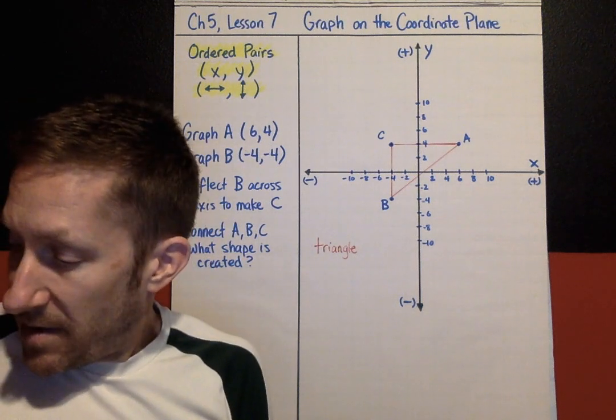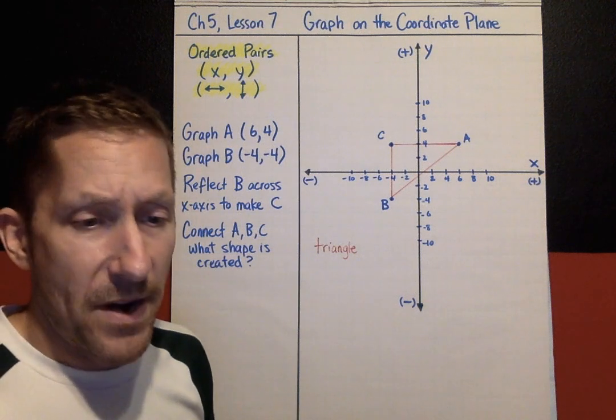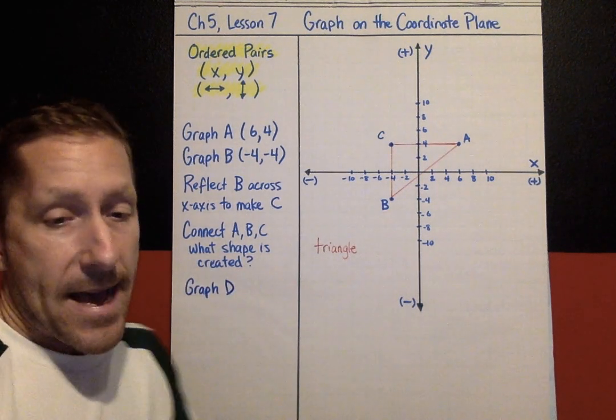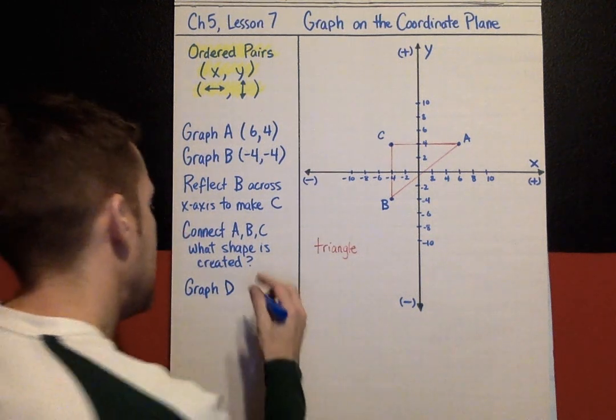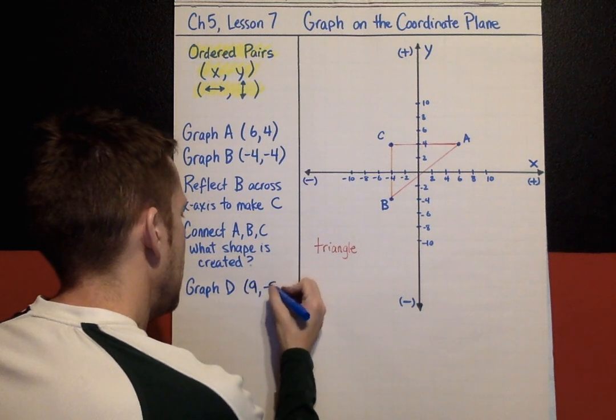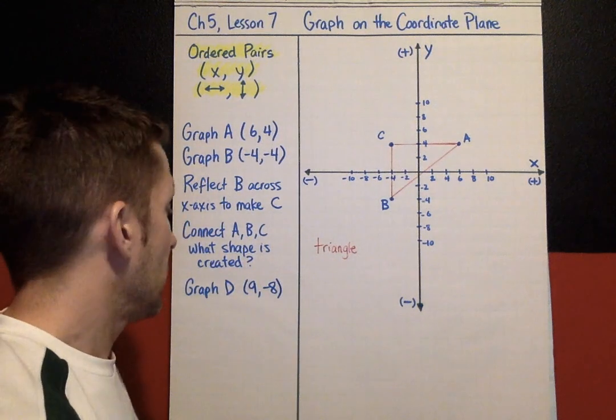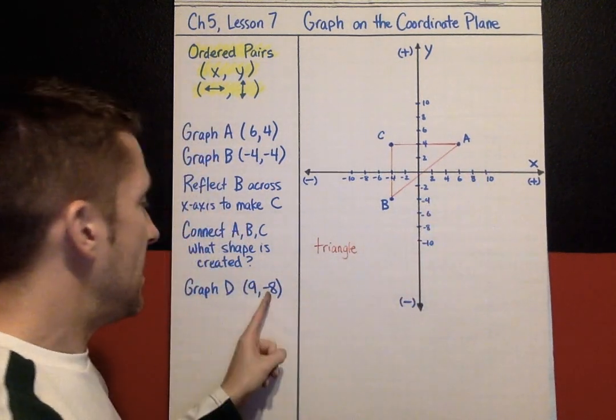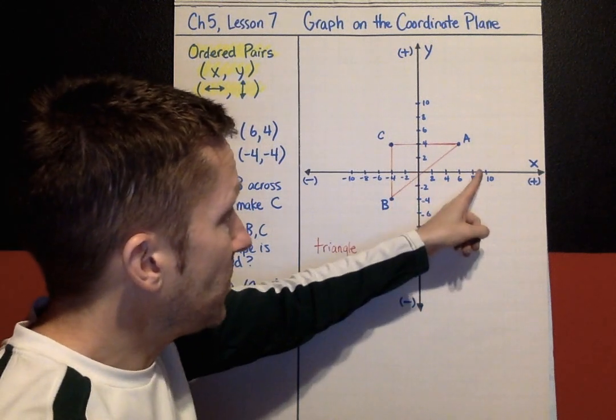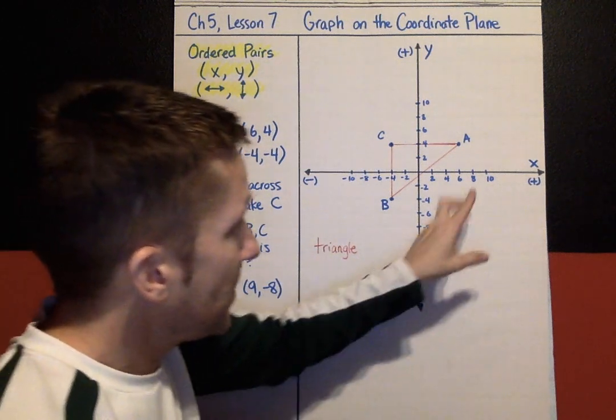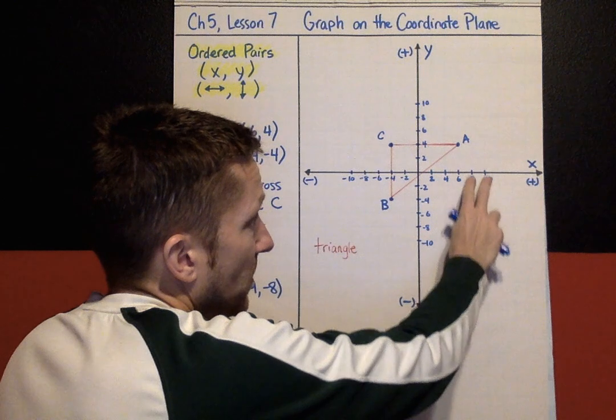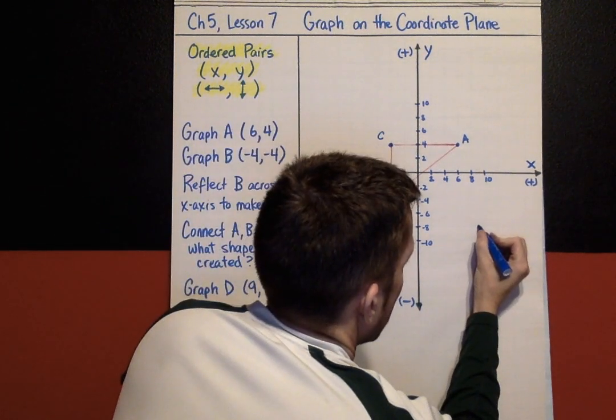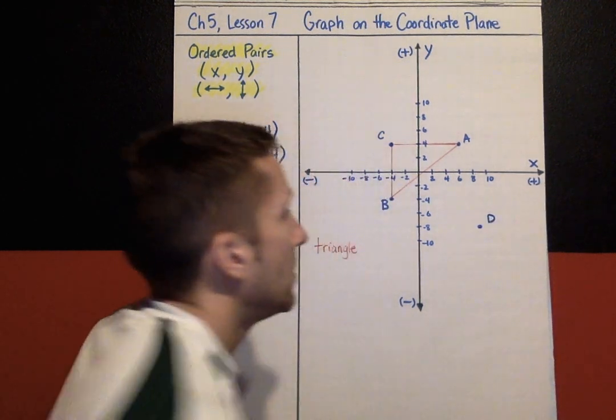Last thing we're going to do is look at distance between two ordered pairs. Graph point D, and D we will locate at 9, negative 8. So where does that belong? Positive 9. I always start at the origin: 2, 4, 6, 8, 10. Nine is going to be right in the middle of 8 and 10. Negative 8 y value—I'm going to go over to 9 and down to 8. So I'm going to be in between these two intervals at 9 and then on this one at negative 8. So point D would wind up being right there.